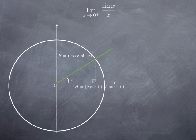In particular, the projection of that point onto the x-axis has coordinates cosine x and zero. The tangent to the unit circle at the point A is perpendicular to the radius OA and intersects the half-ray defining the angle at a point that I call T, which has coordinates (1, tan x).